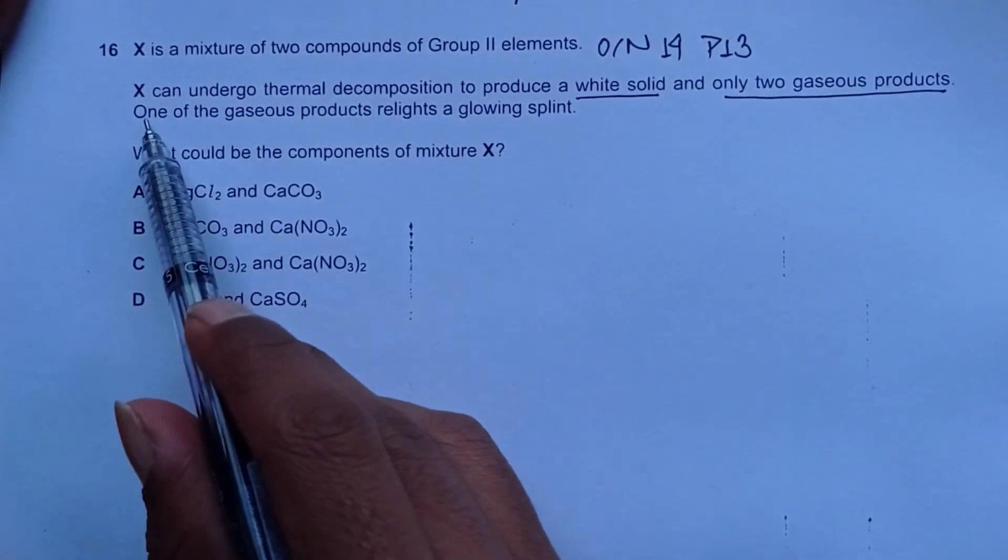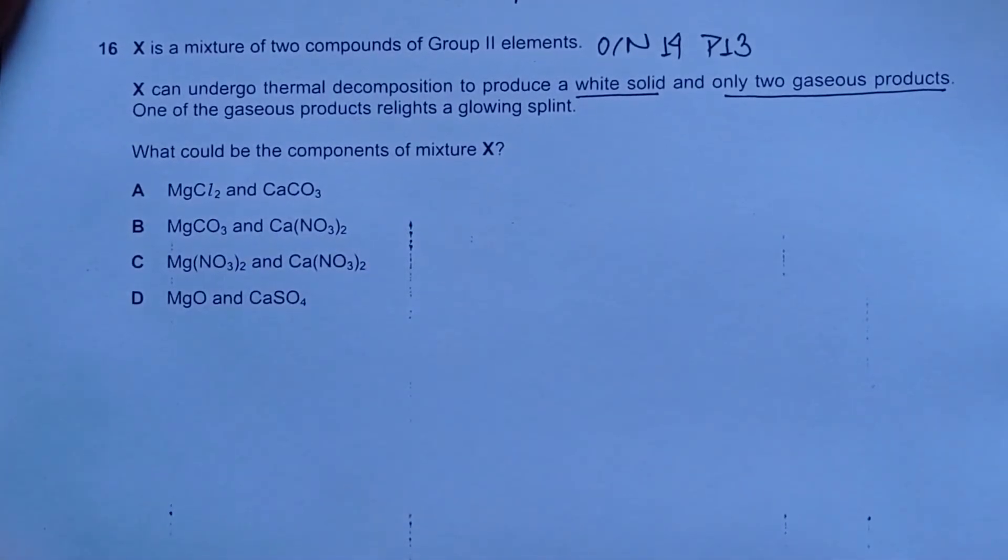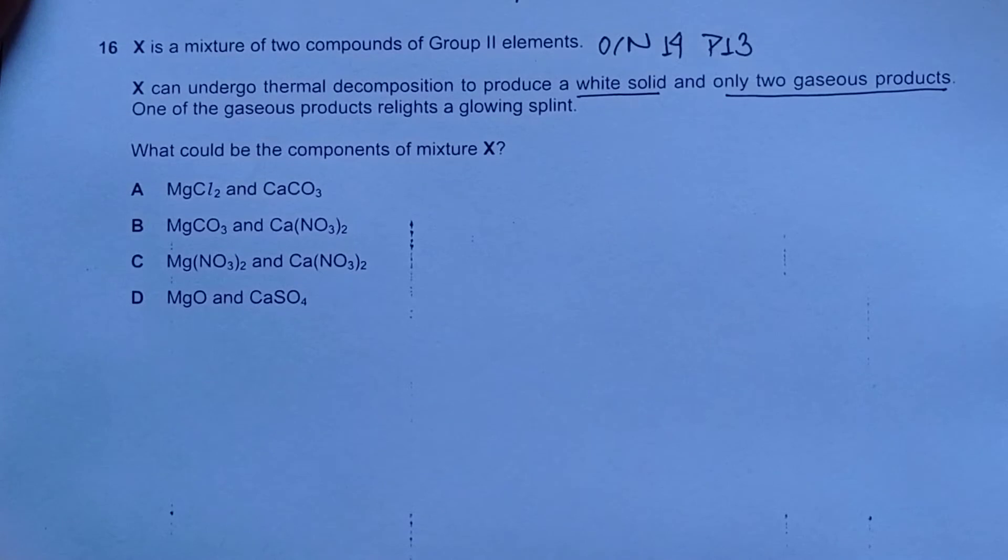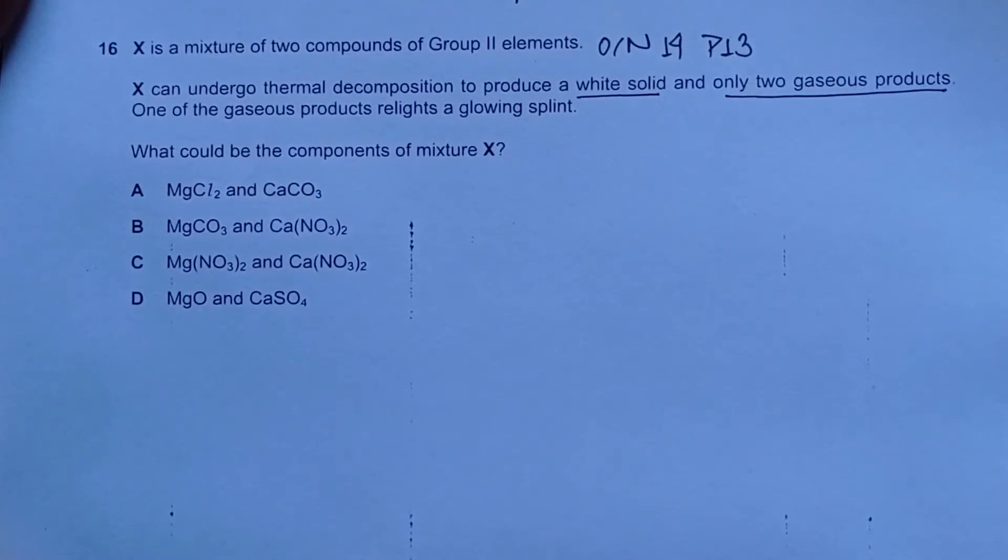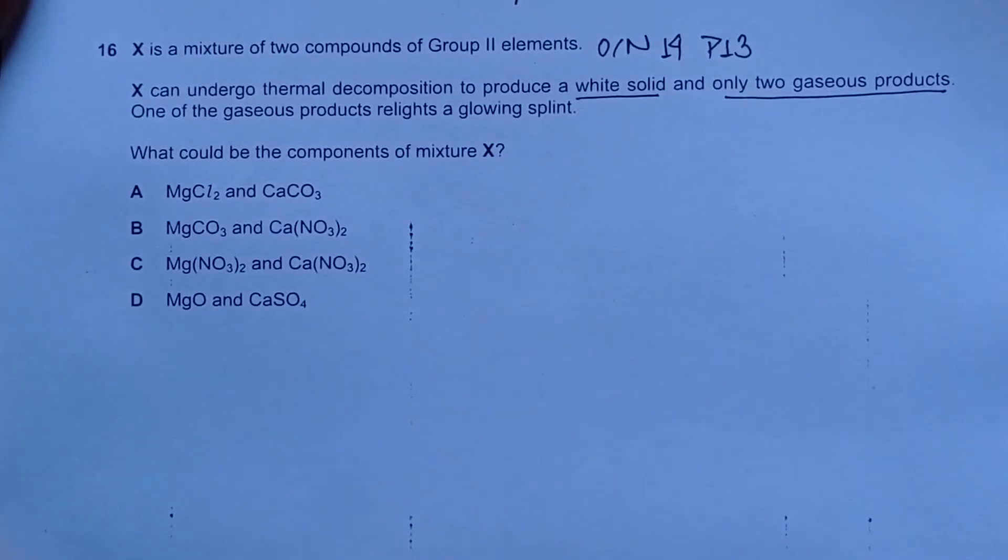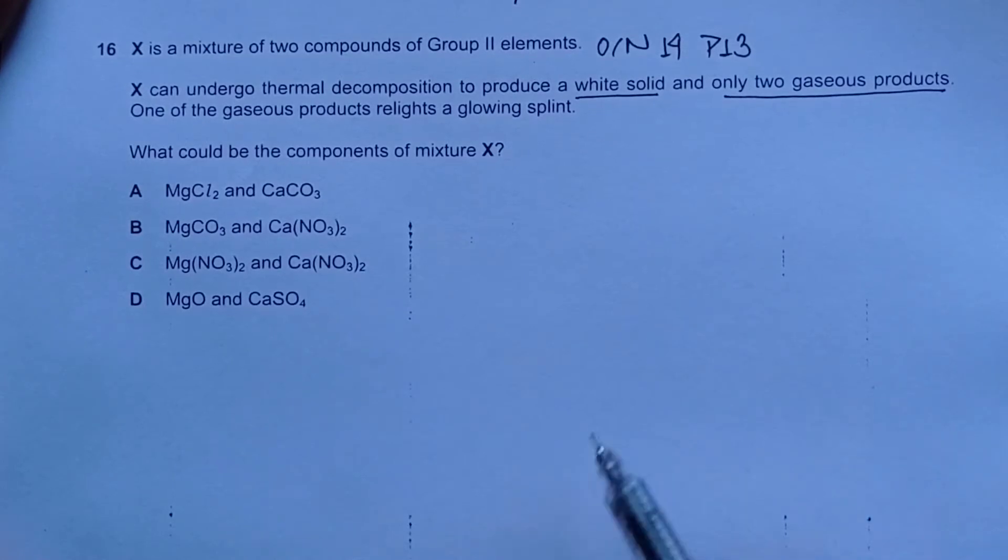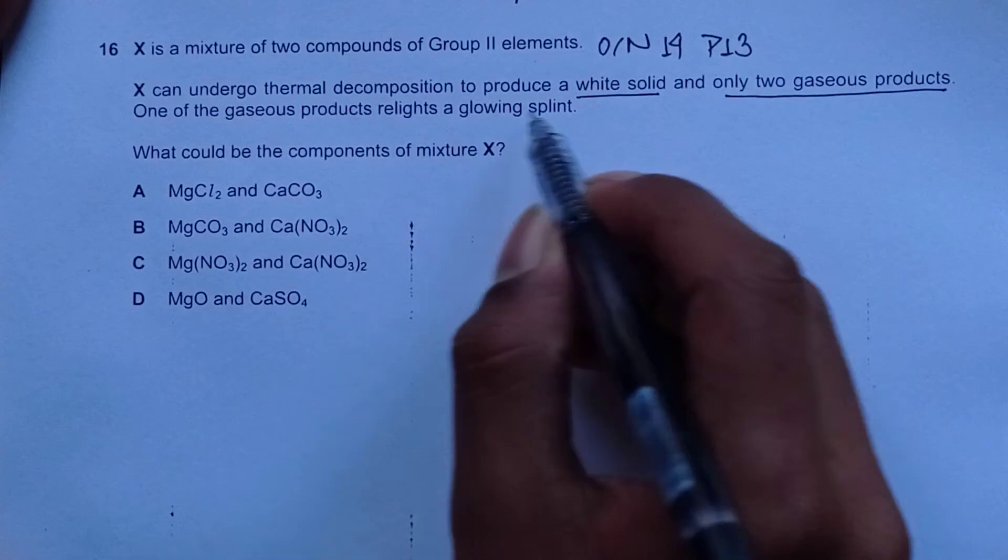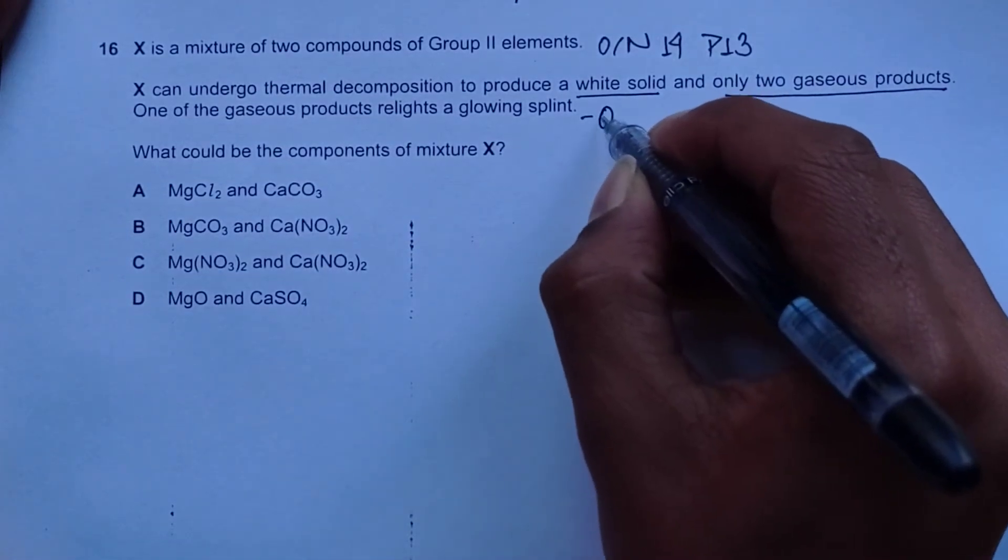The fact that it says relights a glowing splint, you should recall from your work on paper 3 that the gaseous product which relights a glowing splint is oxygen. You can also verify this information by looking at note number 3 in paper 3, which is given at the final two pages. The gaseous product we are dealing with here is oxygen.